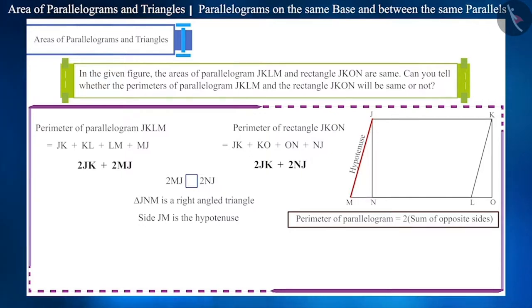And we know that the hypotenuse is always greater than other sides. Therefore, we can say that side JM will be greater than JN or MJ greater than NJ.